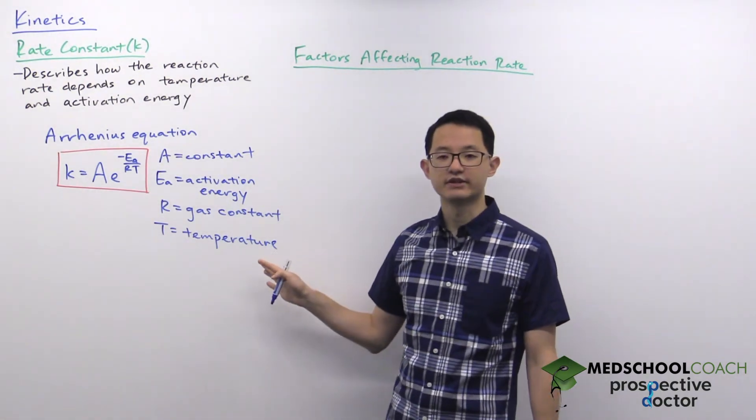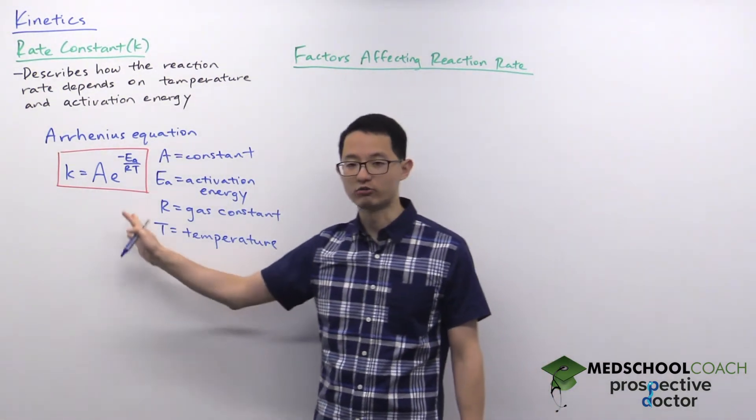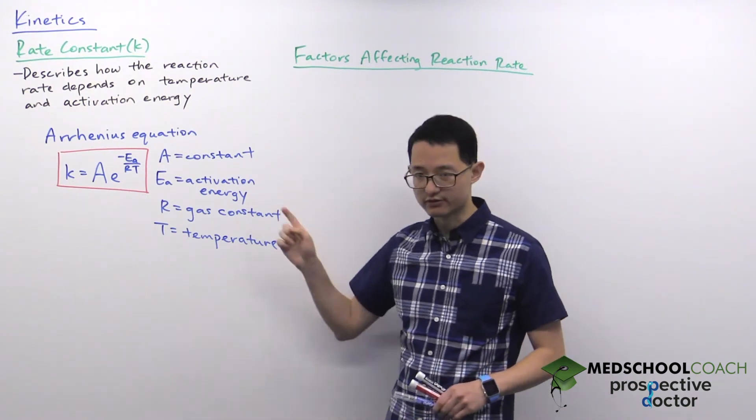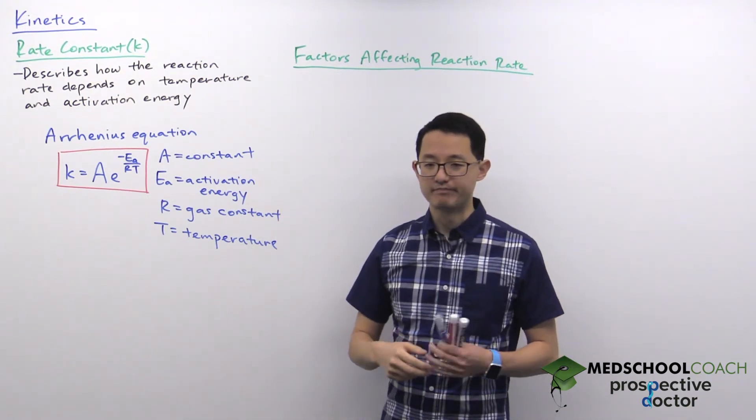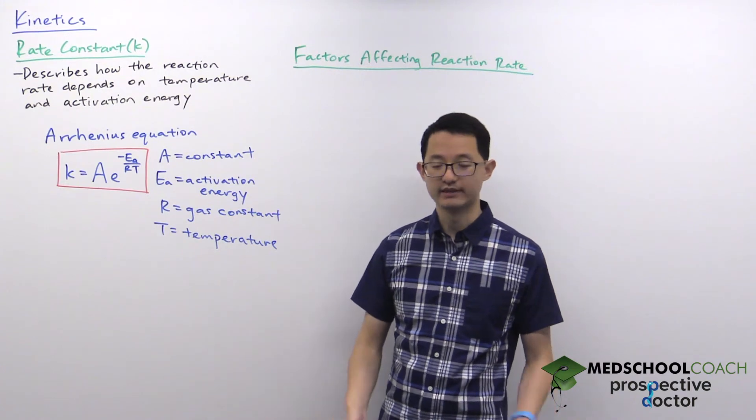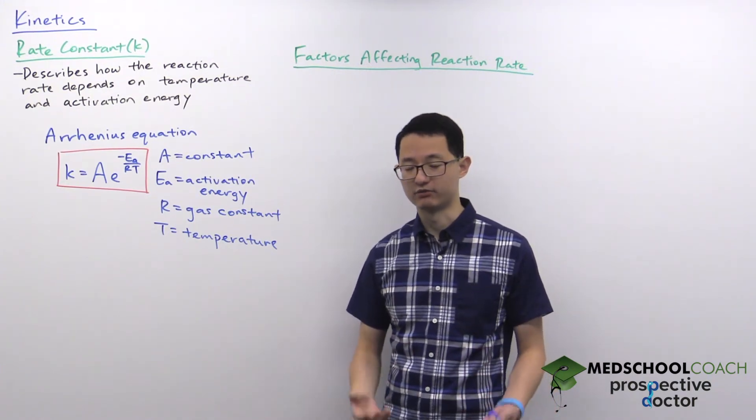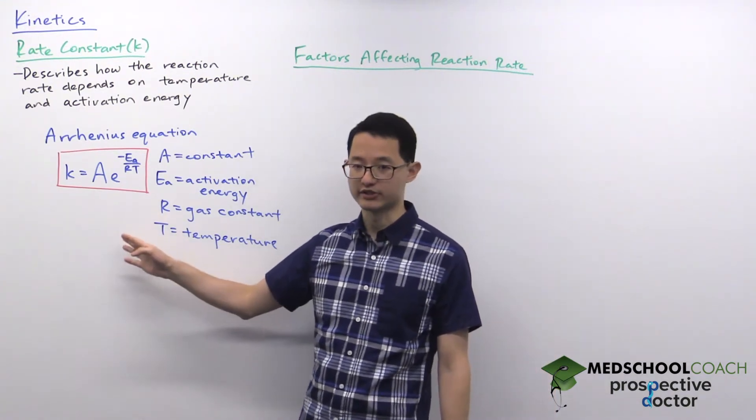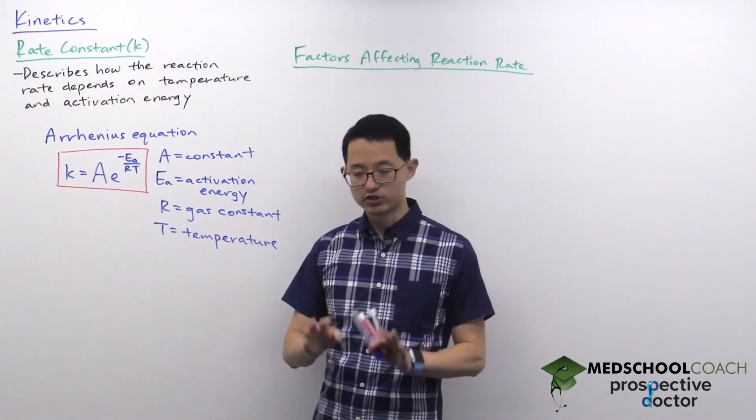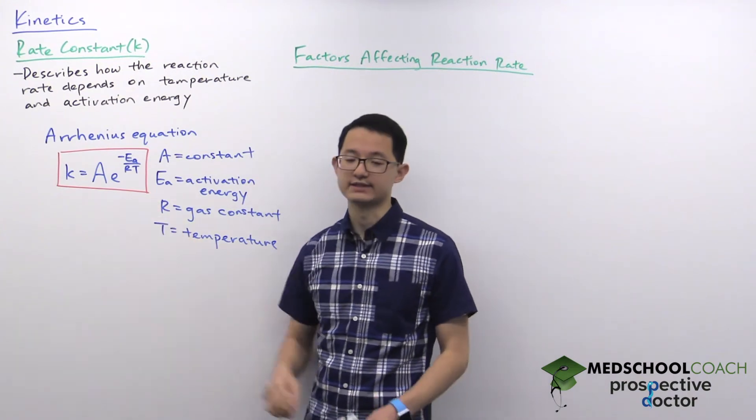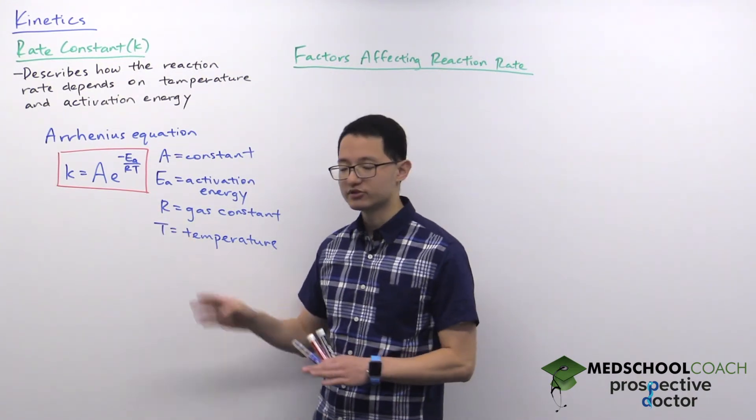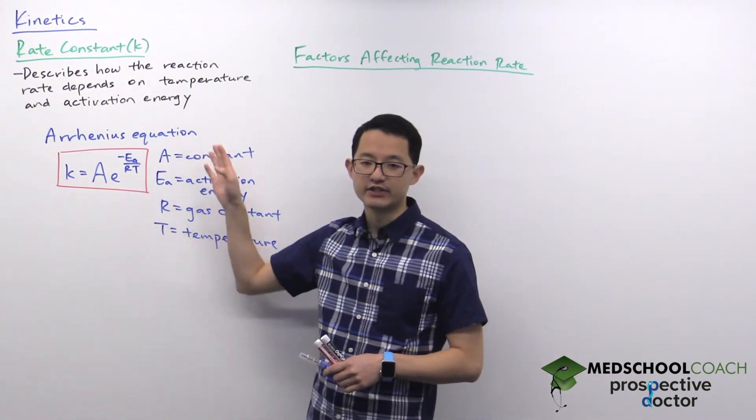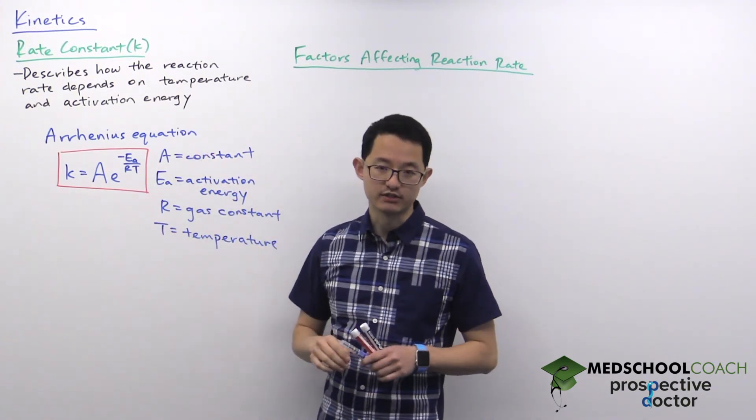Okay, so these are the different variables within the Arrhenius equation. And when you look at this equation it actually looks really complicated. The math is not simple and the MCAT knows you don't have a calculator, so it's unlikely they're going to ask you to do a calculation with this equation. You should be able to recognize this equation and you should know the relationship between the rate constant, activation energy, and temperature based on this equation.